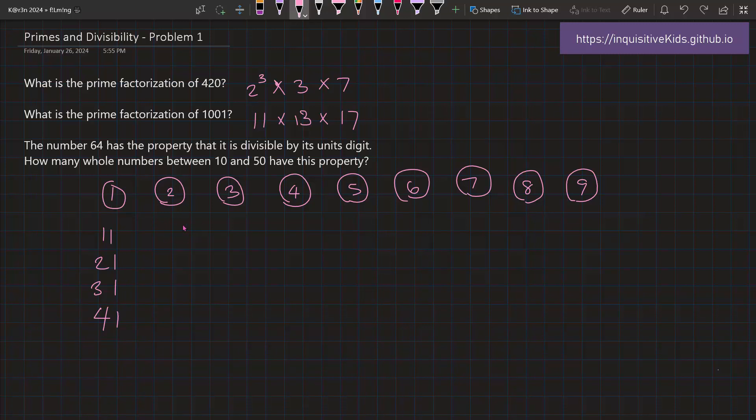Now under 2. If your number is ending in 2, then it must be an even number. Therefore, it must be divisible by 2. So all of these numbers, 12, 22, 32, and 42, would be divisible by 2.